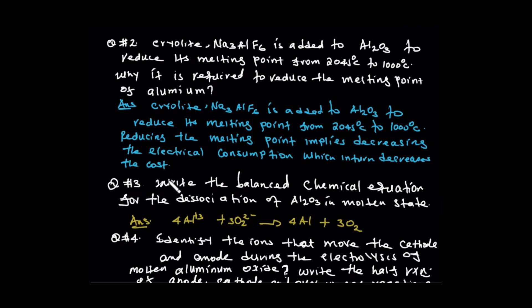Question number three: write the balanced chemical equation for the dissociation of aluminium oxide in a molten state. The dissociation of aluminium oxide in a molten state will be balanced.